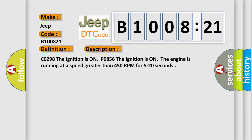CO298: The ignition is on. PO856: The ignition is on, the engine is running at a speed greater than 450 RPM for 5 to 20 seconds.